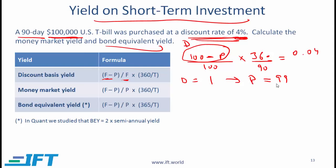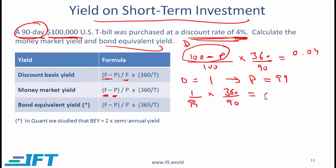You can now use the price of 99,000 to come up with the money market yield. The money market yield is the par value F minus P, which is 99, so we have 1,000 divided by the price 99,000 multiplied by 360 over T. T is 90 days, and what you get is 0.0404, which is 4.04%. Notice that the money market yield is a little bit higher than the discount basis yield of 4%.